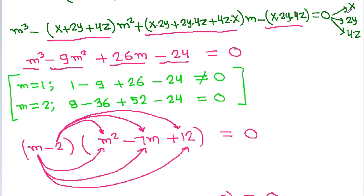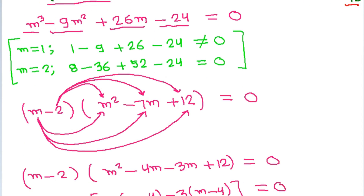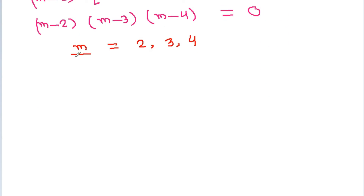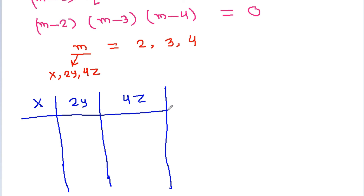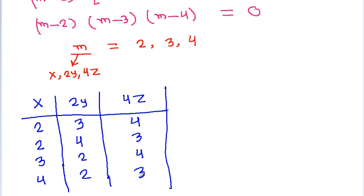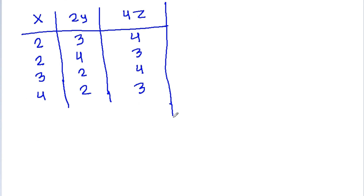So we get m equals 2, 3, or 4. Here m represents x, 2y, and 4z. So x can be 2, 3, or 4; 2y can be 2, 3, or 4; and 4z can be 2, 3, or 4 — assigning the values {2, 3, 4} in all permutations.